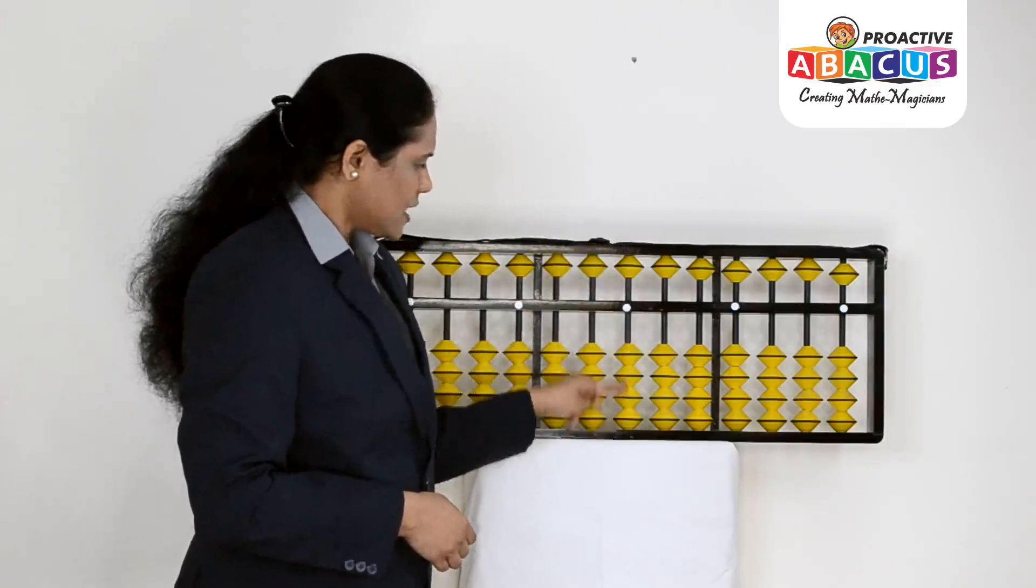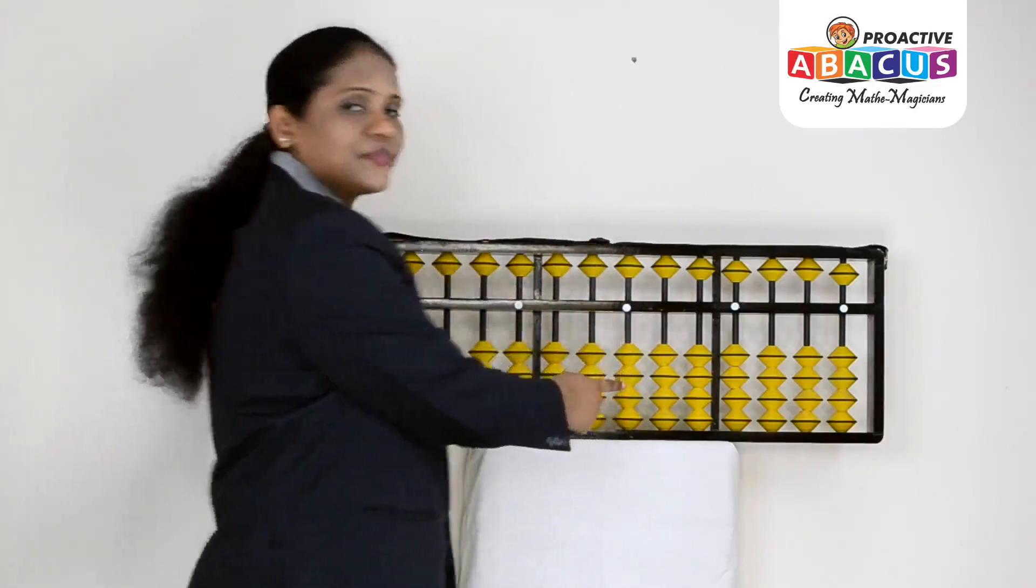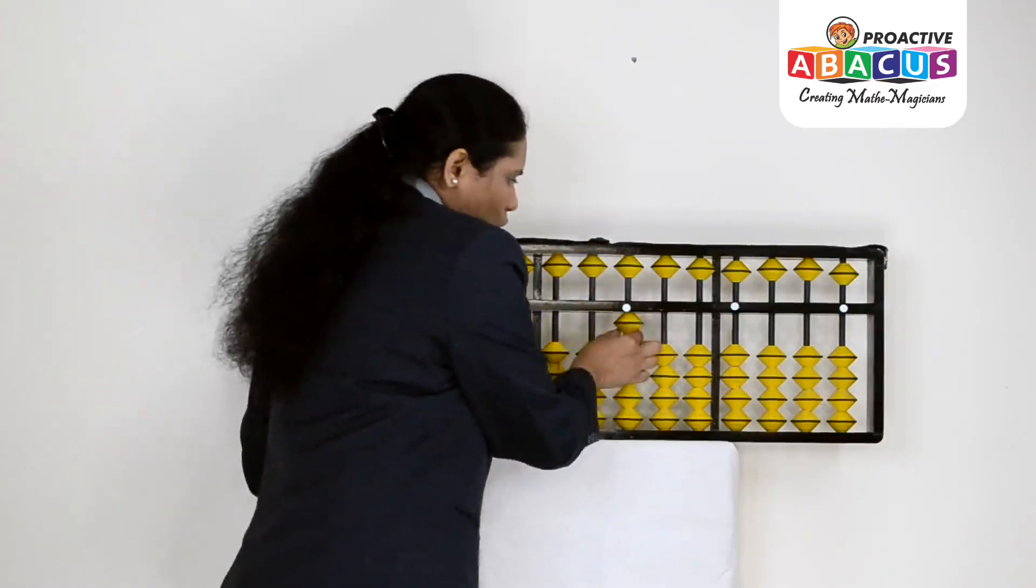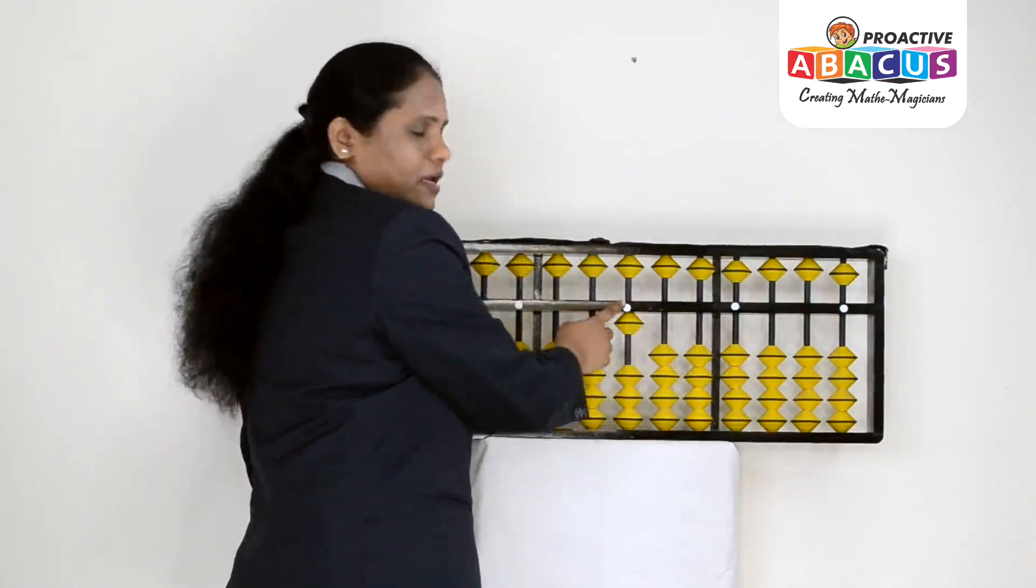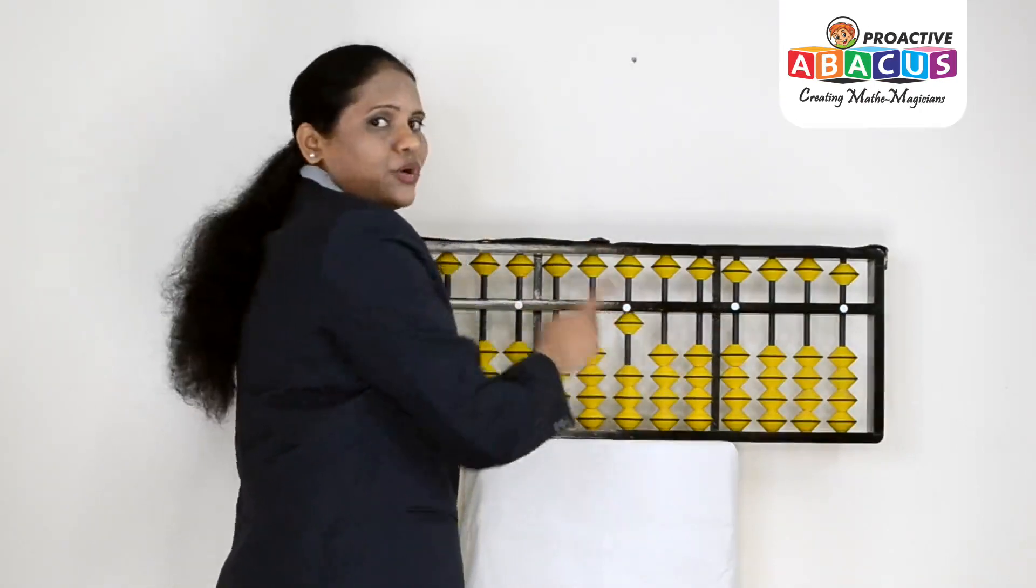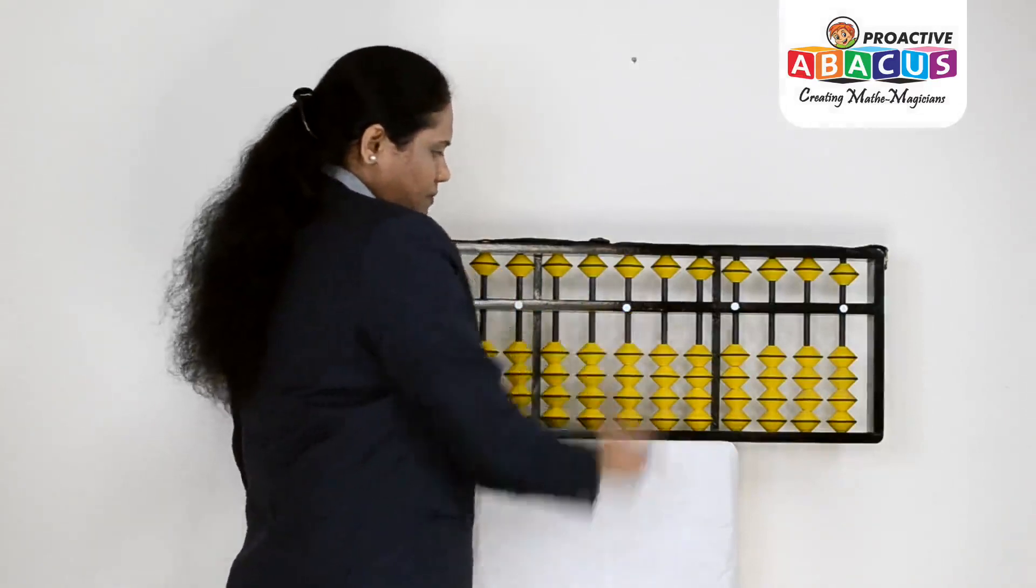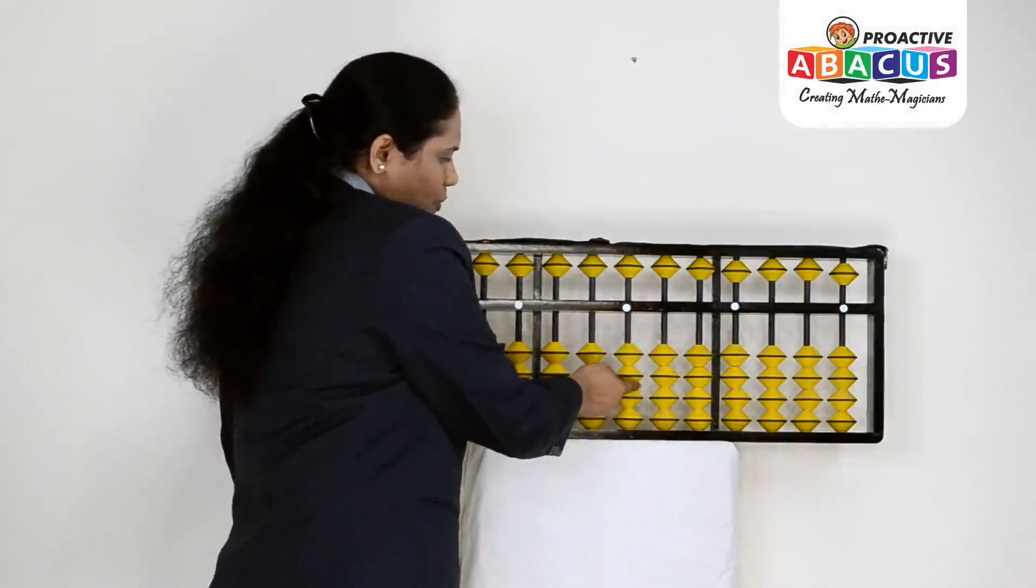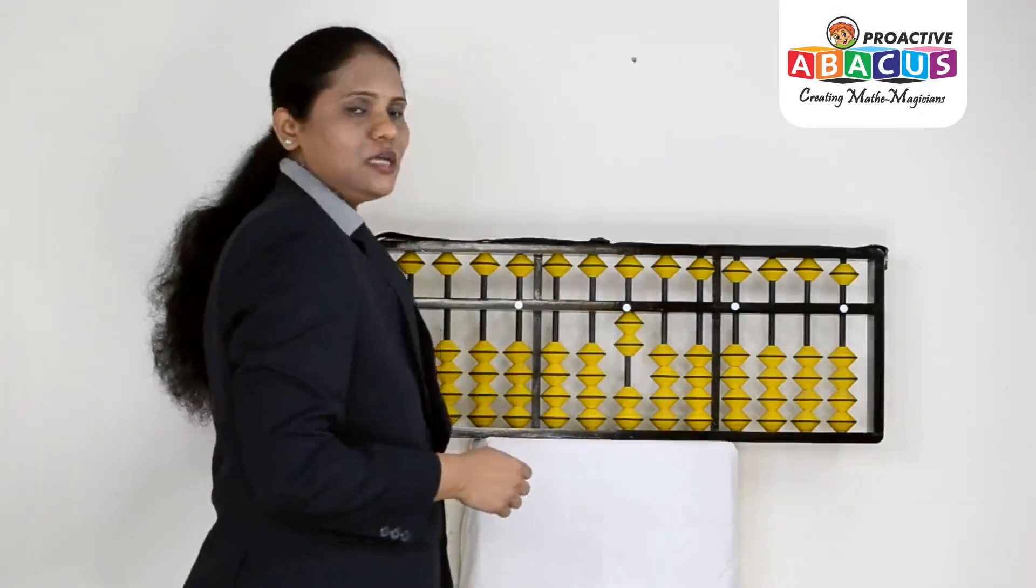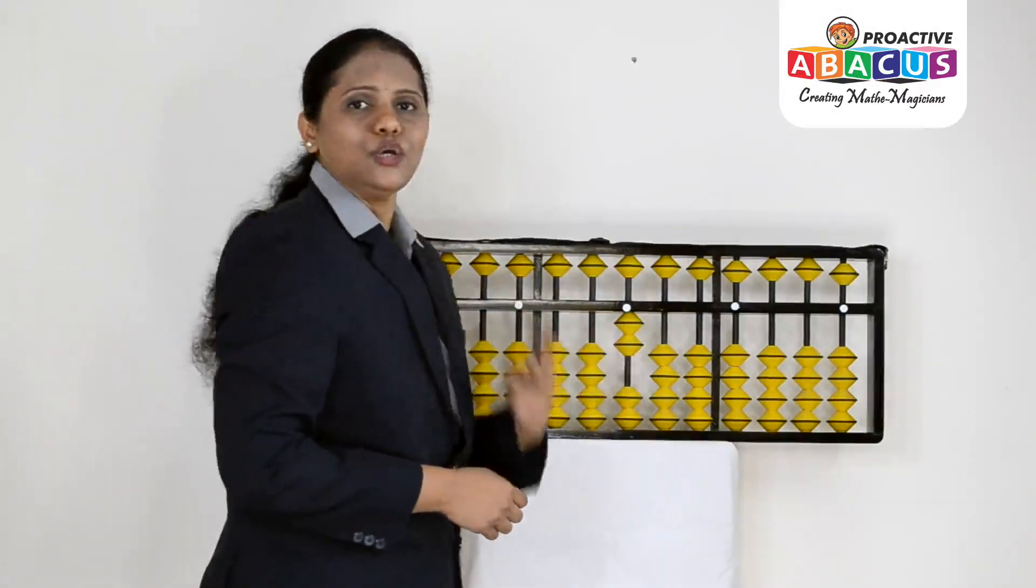In the lower deck, the beads are shown. One bead touching the horizontal bar, the value bar, is 1. The two beads touching the horizontal value bar is 2.